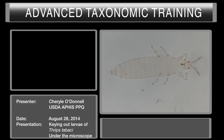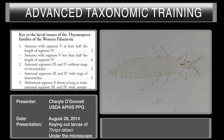Today we're going to key out another specimen, a mystery specimen that was presented to you on a slide. We'll begin using the key to the second instar larvae of Thripidae of the Western Palearctic region by Verbergen et al., beginning on page 109 with couplet number one under the key to the larval instars of the Thysanoptera families of the Western Palearctic.